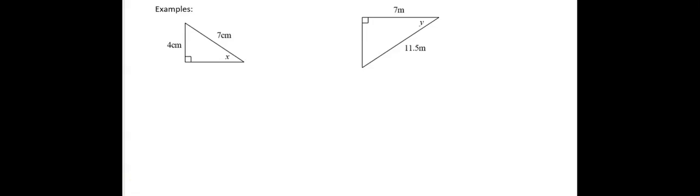In this video we want to look at how we can find an unknown angle or a missing angle in a right angle triangle using trigonometry. We're going to jump to two examples and see how we go.